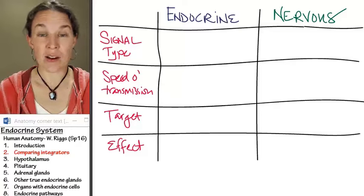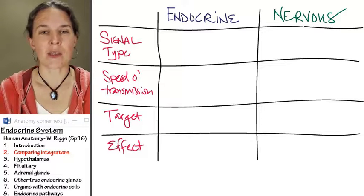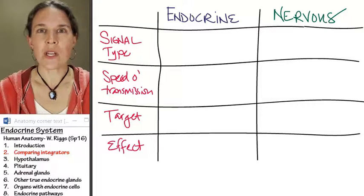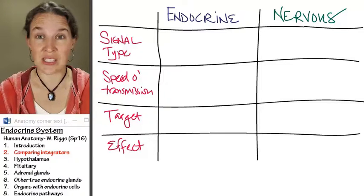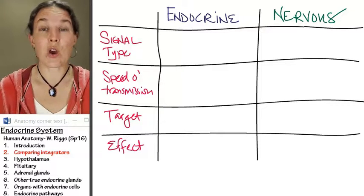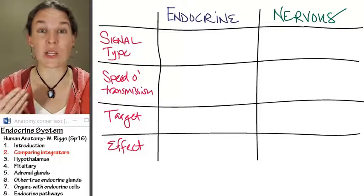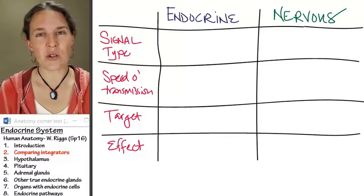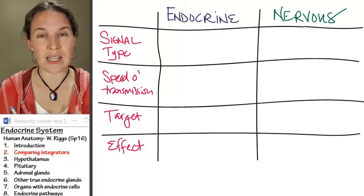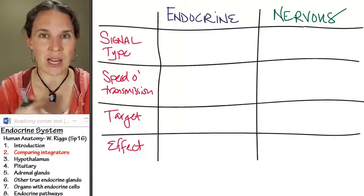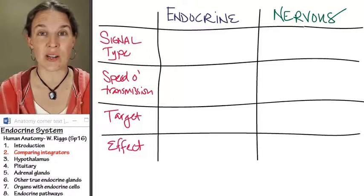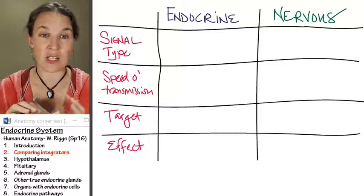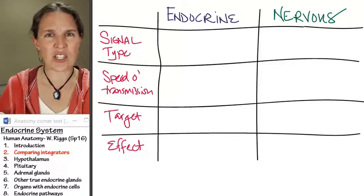Let's start by comparing the endocrine and the nervous system. They're both integrators. If you come across a nervous system structure like the brain or spinal cord, you know that is an integrator in a communication pathway. If you come across an endocrine gland in some kind of communication pathway in your body, you know that endocrine gland is going to be an integrator — receiving information and deciding what to do.